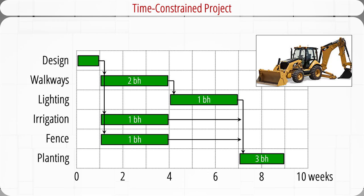After the design is complete, work on walkways, irrigation, and fence can all start. They will need two backholes, one backhole, and one backhole respectively, and will be finished within three weeks. After walkways are done, we may start to work on lighting, which will need one backhole and last for three weeks. After lighting, irrigation, and fence are all done, the final activity, planting, can start. It needs three backholes and lasts for two weeks. Overall, the project duration is nine weeks.